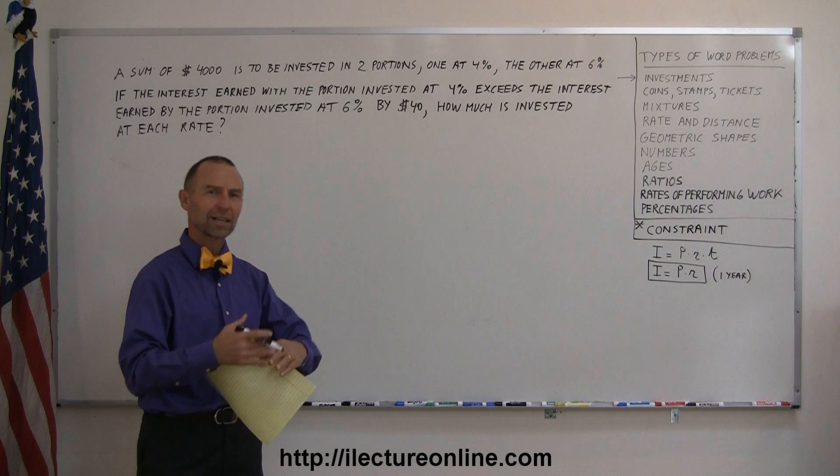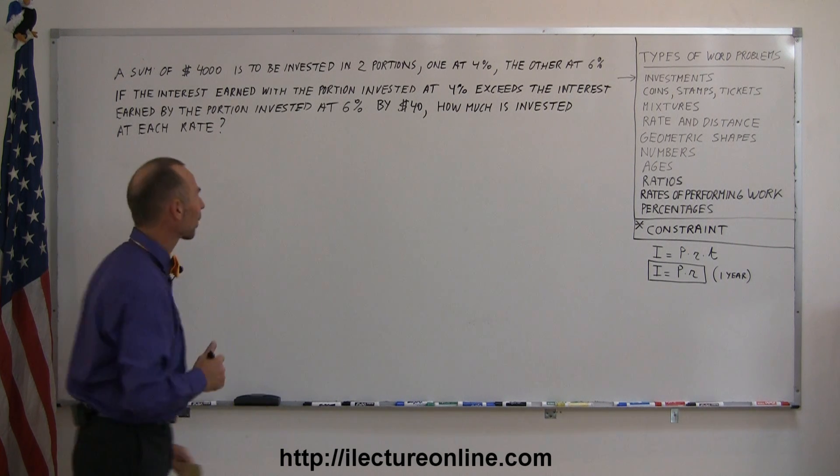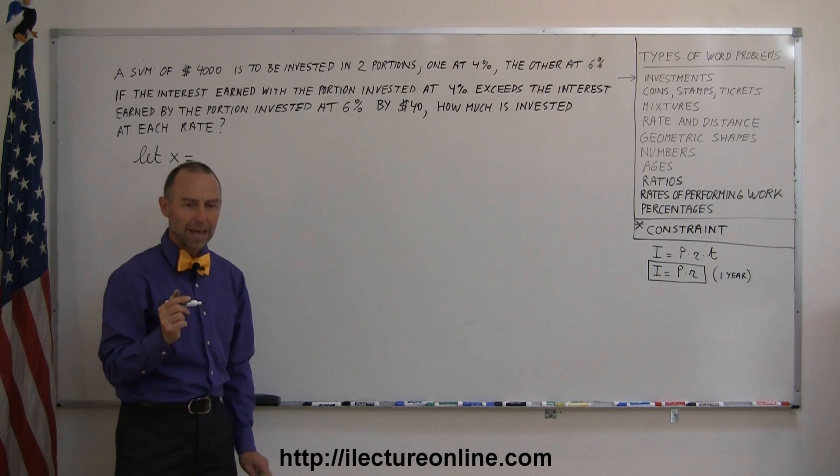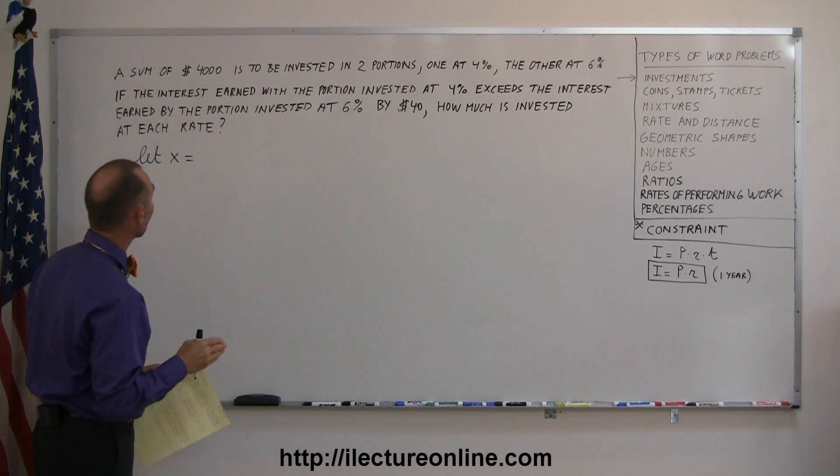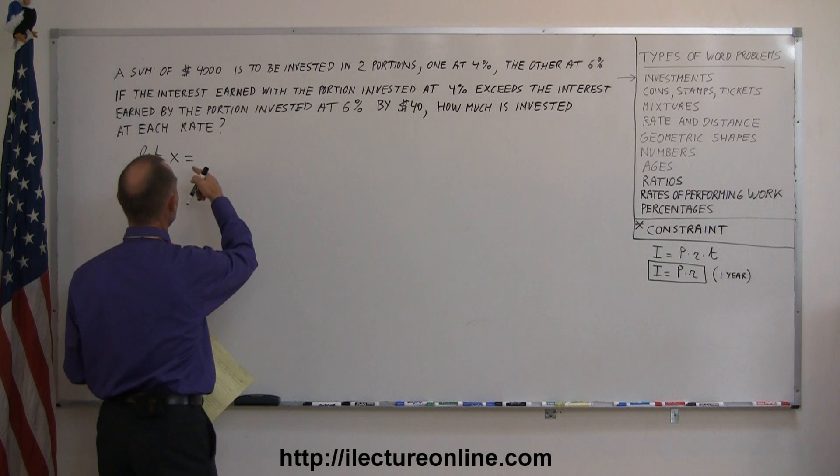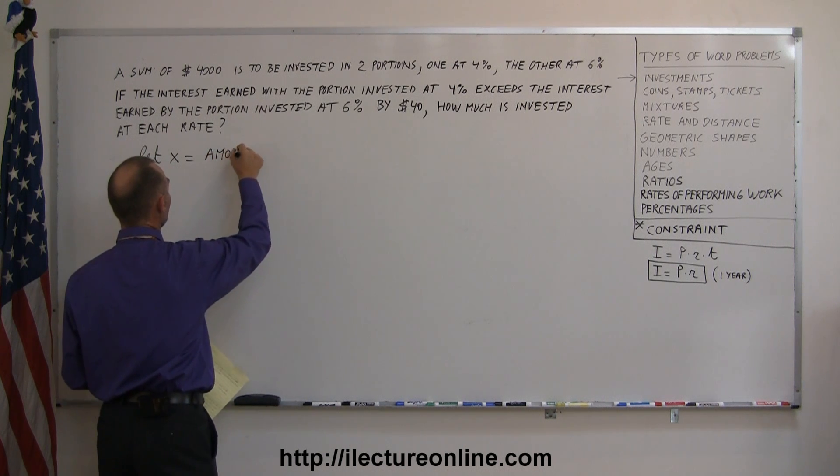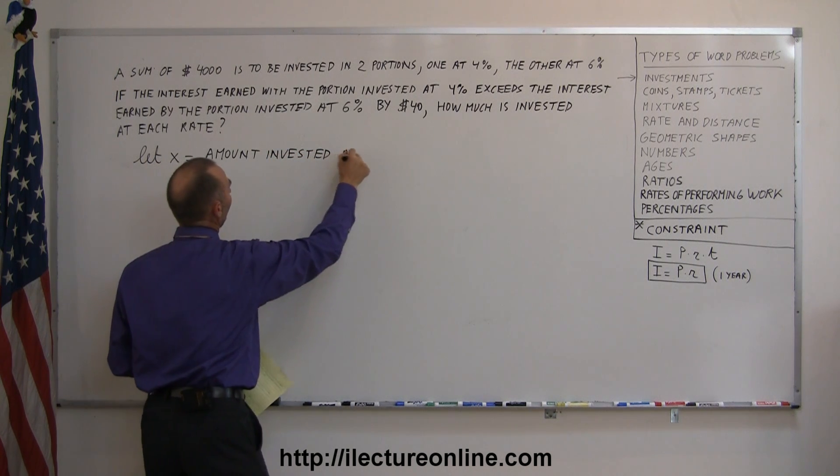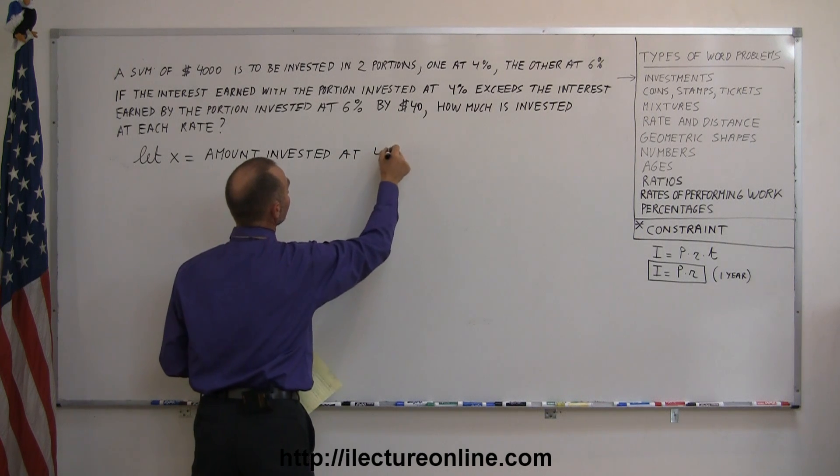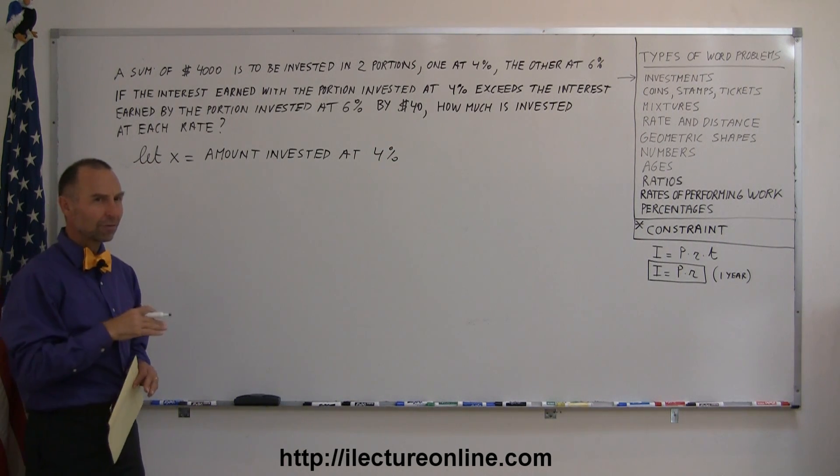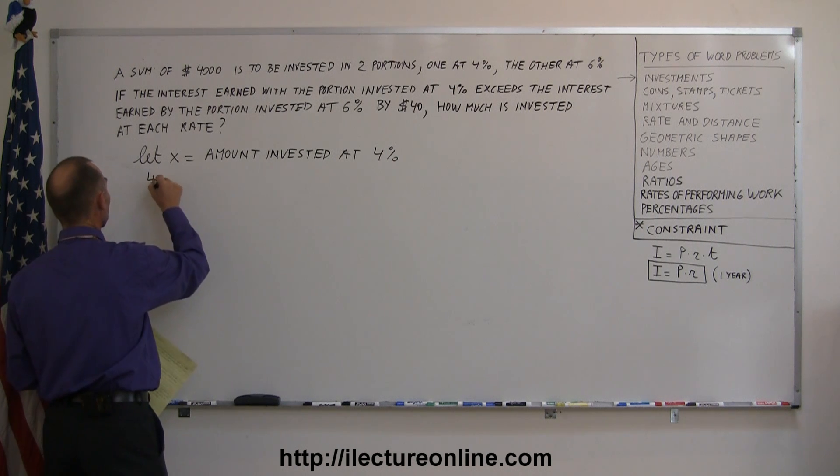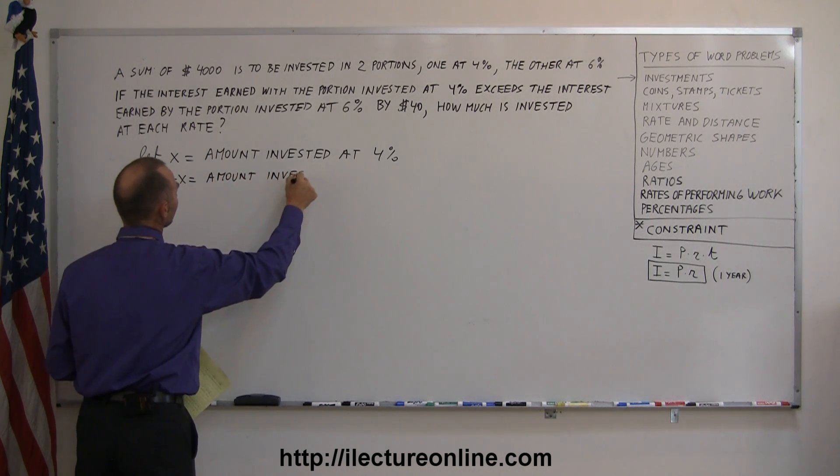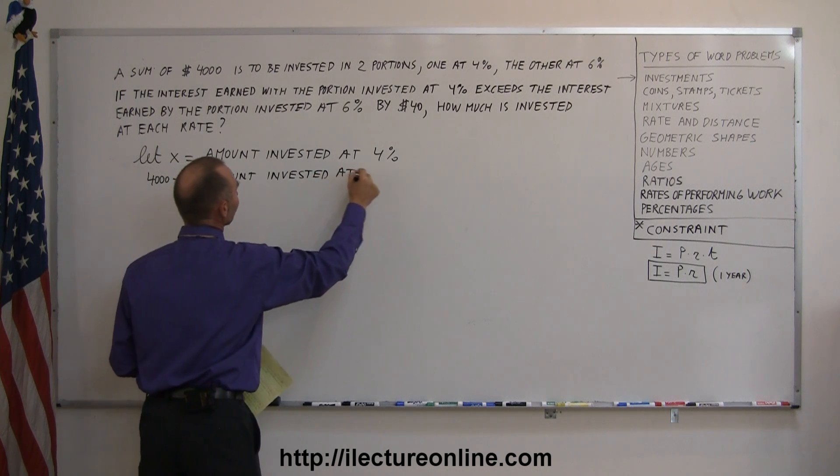You read it twice and you still get confused. Well, let's go ahead and start working out this problem. We always like to start with saying let X equal, and of course, remember we had two portions that add up to $4,000, so let X equal the first portion. Let X equal the amount invested at 4% and then the 4,000 minus X, the remainder, 4,000 minus X, is equal to the amount invested at 6%.